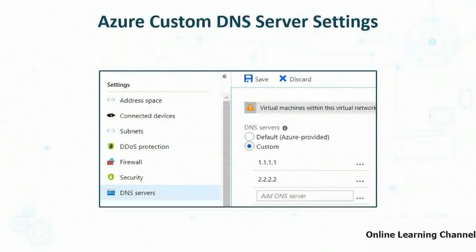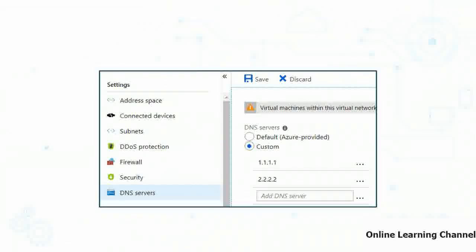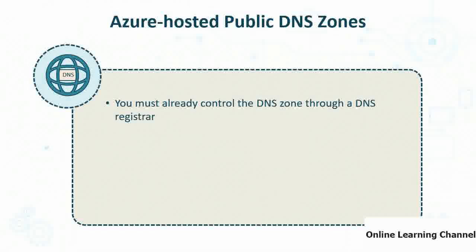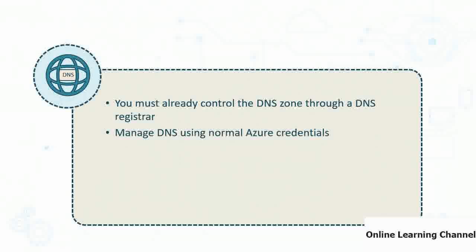In the Azure portal, the DNS servers configuration within a VNet can be set to custom by selecting it instead of the default Azure-provided option, then specifying IP addresses for custom DNS servers. You can specify more than two — even five or more. If hosting a public DNS zone in Azure, you must already control that DNS zone through a registrar — you must own the DNS name. You then manage DNS using normal Azure credentials through the portal, PowerShell, or the CLI.